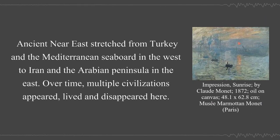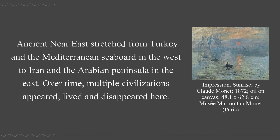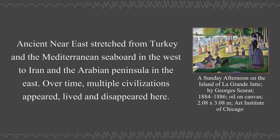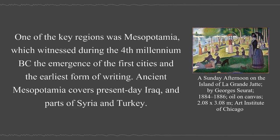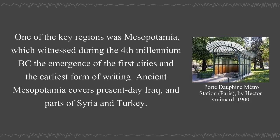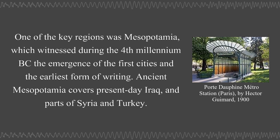The Ancient Near East stretched from Turkey and the Mediterranean seaboard in the west to Iran and the Arabian Peninsula in the east. Over time, multiple civilizations appeared here. One of the key regions was Mesopotamia, which witnessed during the fourth millennium BC the emergence of the first cities and the earliest form of writing. Ancient Mesopotamia covers present-day Iraq and parts of Syria and Turkey.